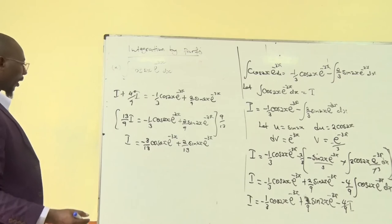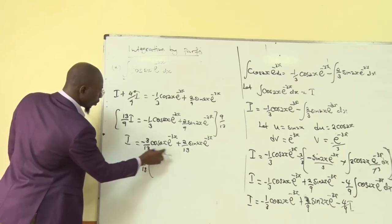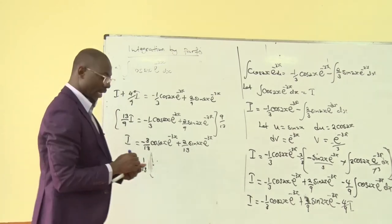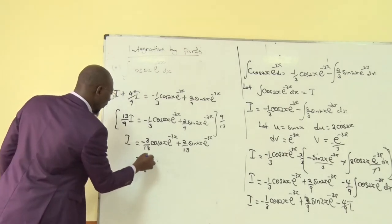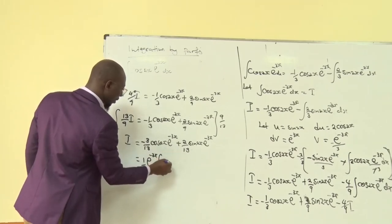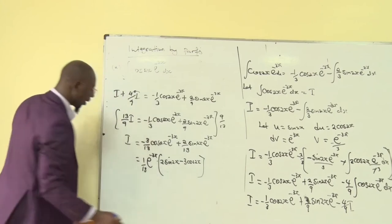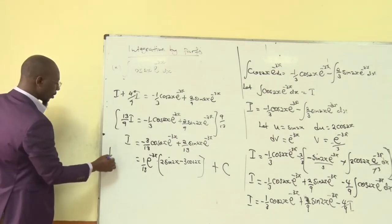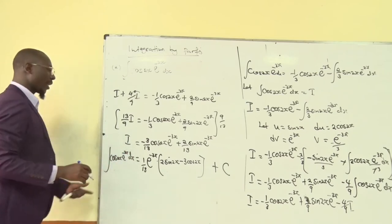We can factor out common terms. The exponential e^(−3x) and (1/13) are common, so factoring: I = (1/13)·e^(−3x)·[2·sin(2x) − 3·cos(2x)] + C. Adding the constant C, this is the integral of cos(2x)·e^(−3x) dx.